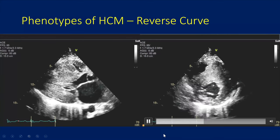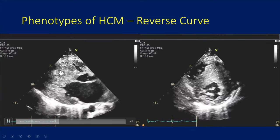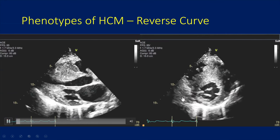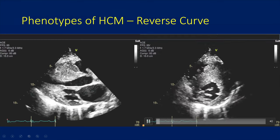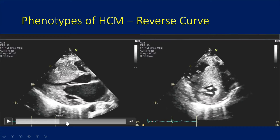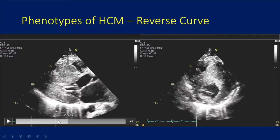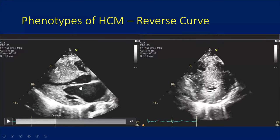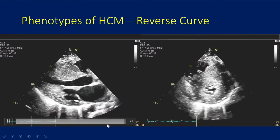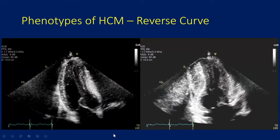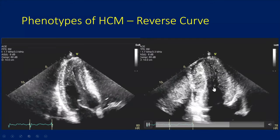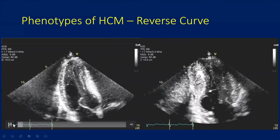This is the reverse curve HCM. As you can see, there's marked thickening of the mid-ventricular septum. The LV cavity is significantly distorted giving you more of a convex shape. In the short axis, you can see the mid-ventricular septum is quite significantly thicker. When this happens, the LV thickens at the mid-ventricular septum, which causes the LVOT to narrow and causes significant mitral SAM. These apical images of the reverse curve demonstrate just how distorted that cavity is and how convex that shape is — this is the classic reverse curve HCM.